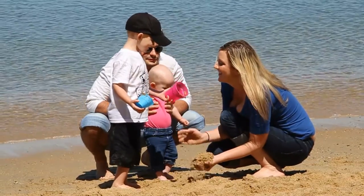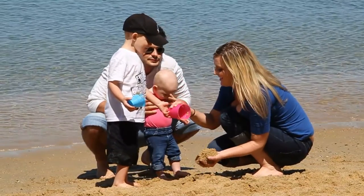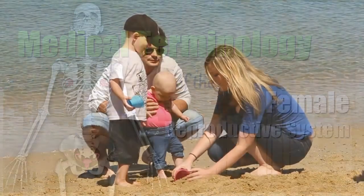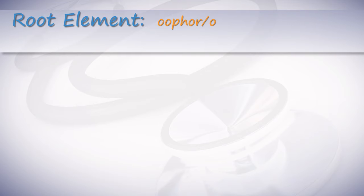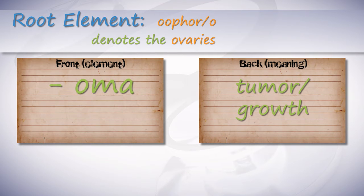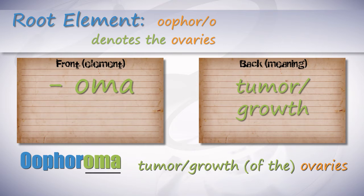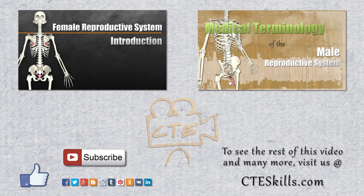However, you'll still learn a few facts of the reproductive system as we cover the terminology associated with it. In this video, we'll be covering the medical terminology of the female reproductive system. Root element 'ooforo' denotes the ovaries. The suffix '-oma' means tumor or growth — combined: 'oophoroma.'